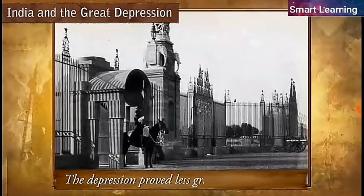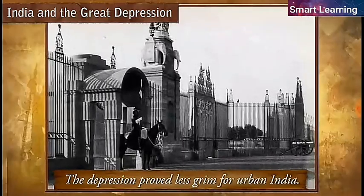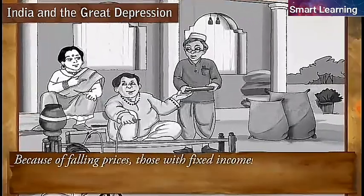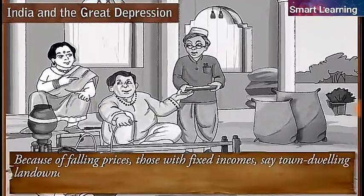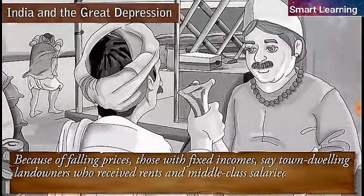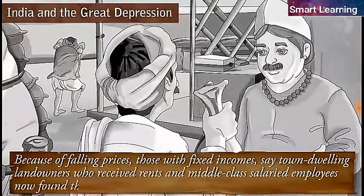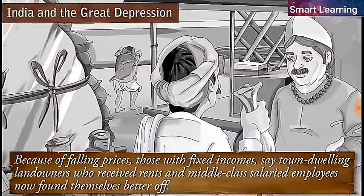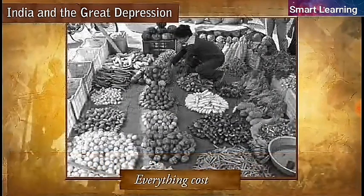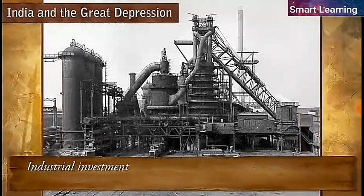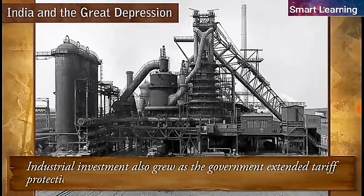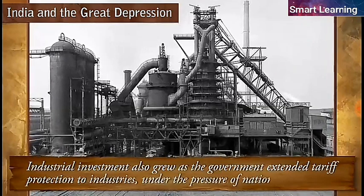The depression proved less grim for urban India. Because of falling prices, those with fixed incomes — such as town-dwelling landowners who received rents and middle-class salaried employees — now found themselves better off, as everything cost less. Industrial investment also grew as the government extended tariff protection to industries under the pressure of nationalist opinion.